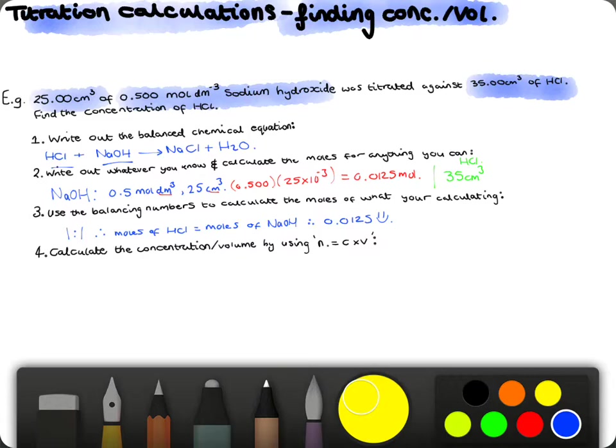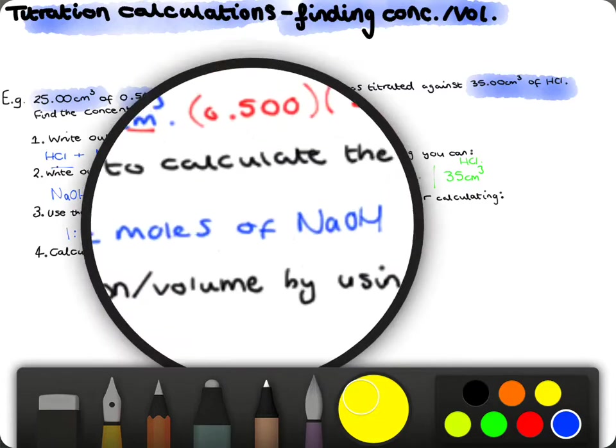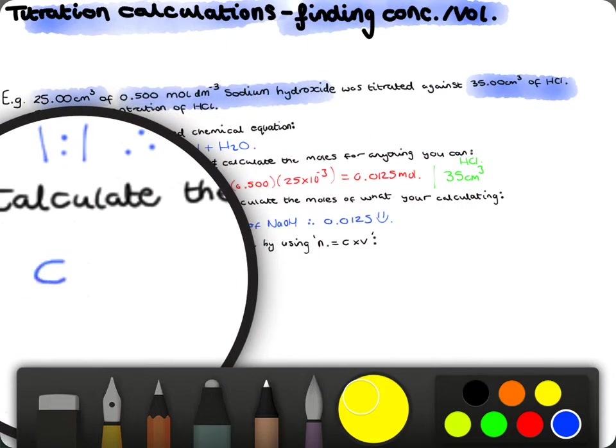Okay, so, now we've got our moles of hydrochloric acid. The final step is the easiest step, and that's just calculating our concentration or volume by using n equals c times v, rearranged to give whatever we need. So, in this case, we will rearrange that for concentration. So, that's concentration equals number of moles over volume.